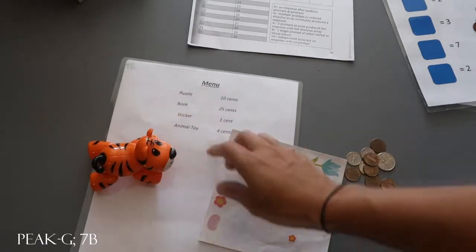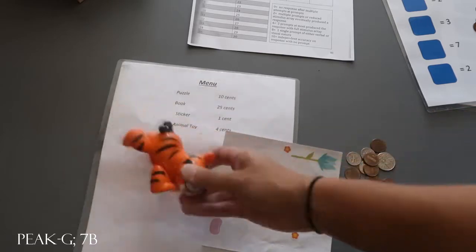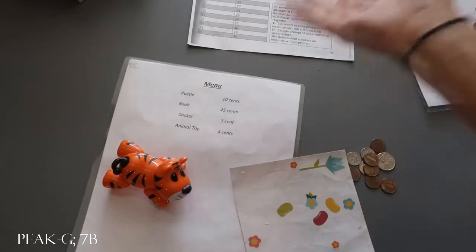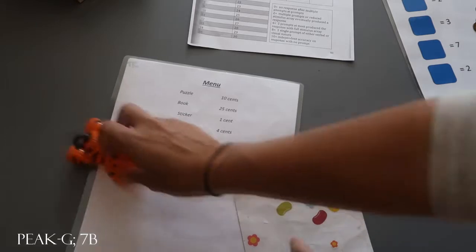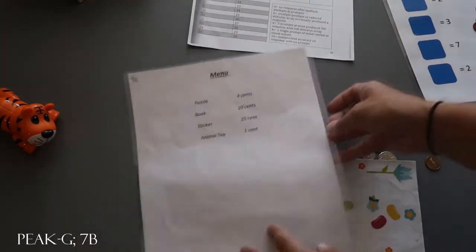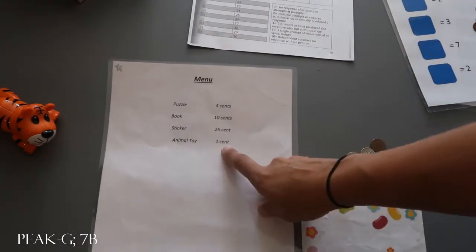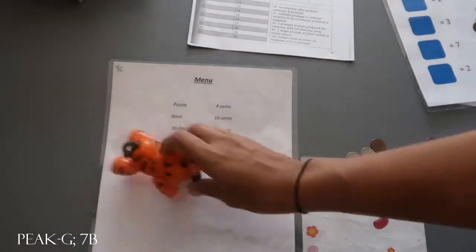So this was the toy. Again, for the train side, if they would pick the toy, that would be 4 cents and they would give us 4 cents. If we were doing the test side and they picked the toy, then it would be 1 cent for that same toy.